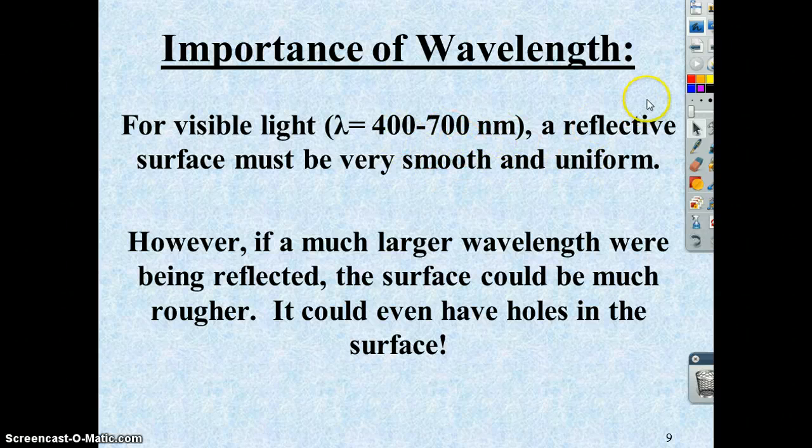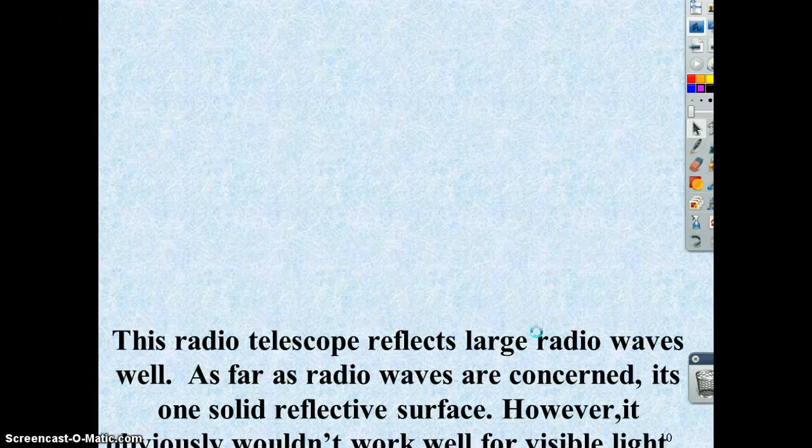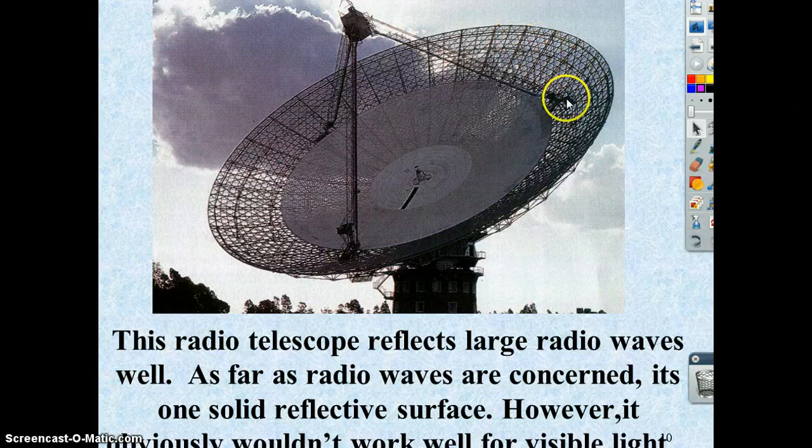However, if you have larger wavelength stuff, you can still reflect it, even though the surface is very rough. It can even have holes in the surface. So if you've ever seen these radio telescopes, right, they're like a grid structure like this.